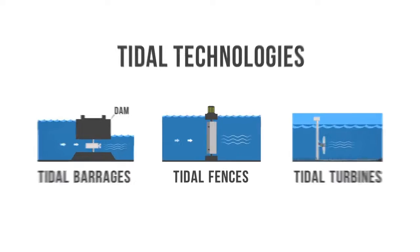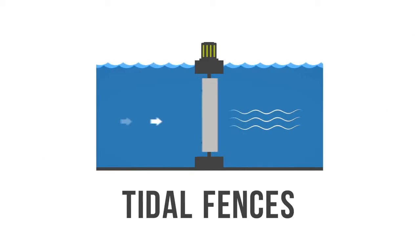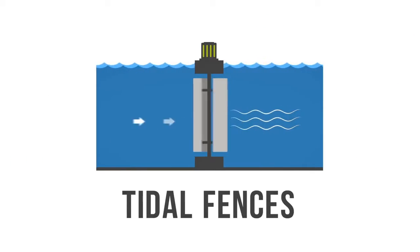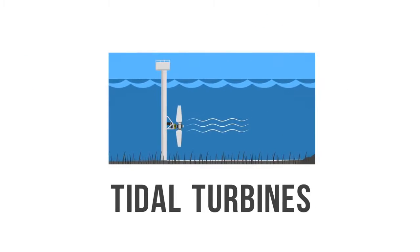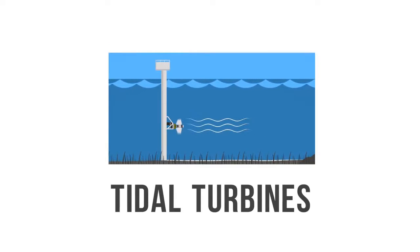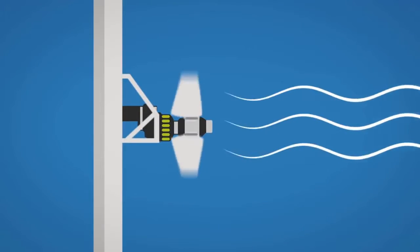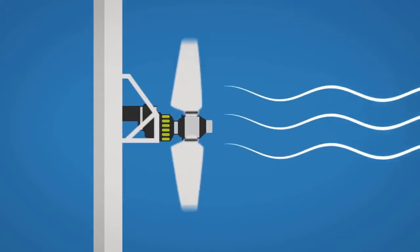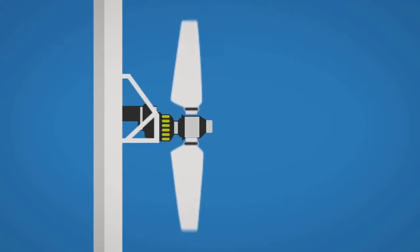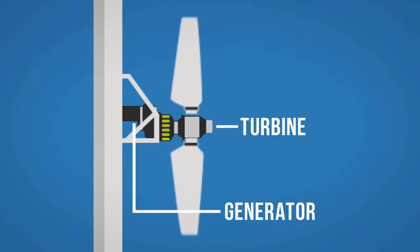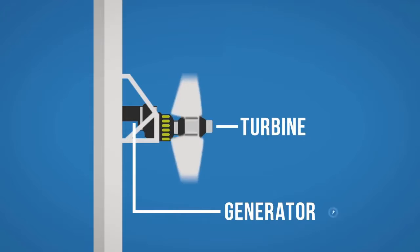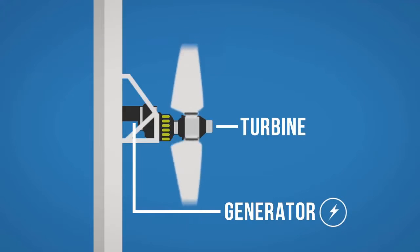Tidal fences are turbines that operate like giant turnstiles, whereas tidal turbines are similar to wind turbines, only underwater. In both cases, electricity is generated when the mechanical energy of tidal currents turns turbines connected to a generator. The generator produces electricity.